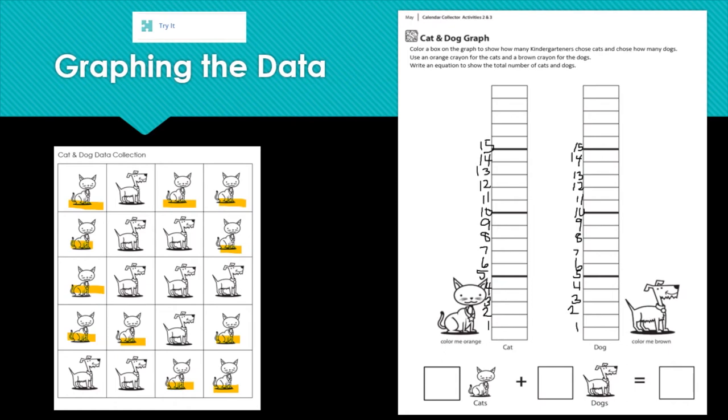So now we need to put this data on our graph. We need to color in the bars to show how many. So we're going to color in 11 spaces. 1, 2, 3, 4, 5, 6, 7, 8, 9, 10, 11. So we had 11 cats.